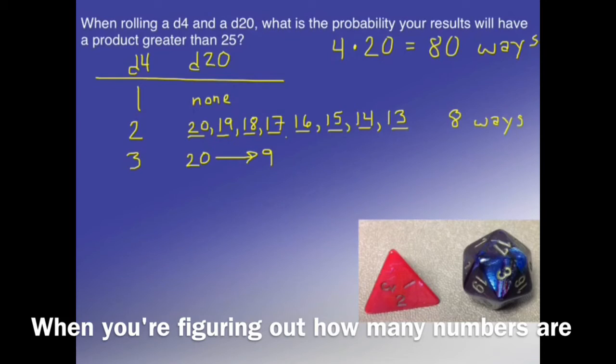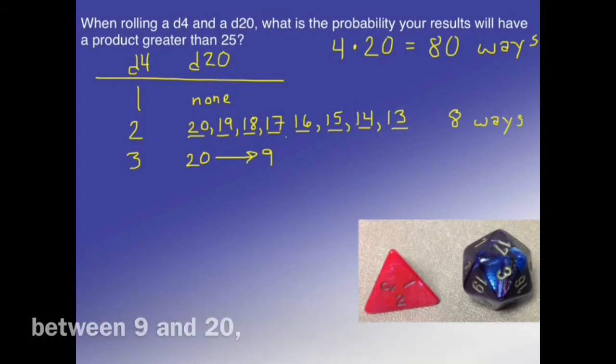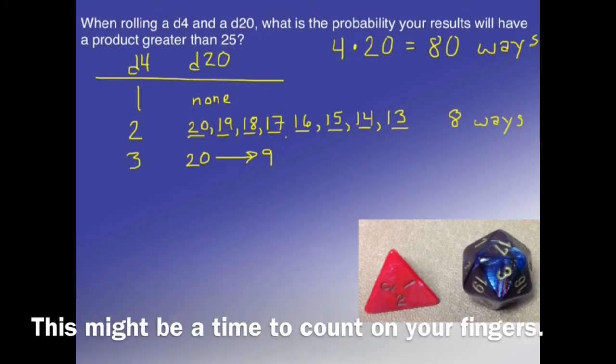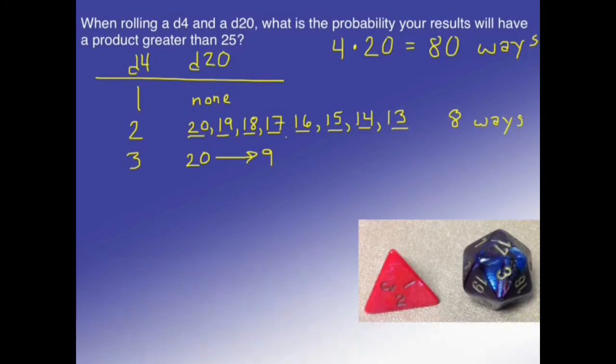When you're figuring out how many numbers are between 9 and 20, make sure that you include both the 9 and the 20. This might be a time to count on your fingers. This works out to being 12 ways.